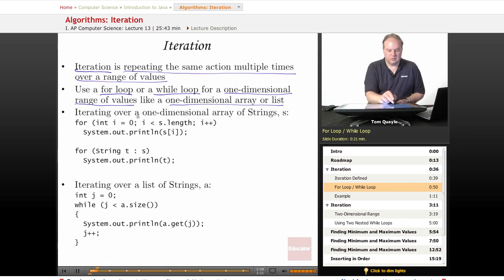Here's an example iterating over a one-dimensional array of strings called s. We have a for loop that starts at 0 and goes to less than the length of the array s, incrementing i each time, and it simply prints out the value s at position i in the array. This would print each item in the array one time.